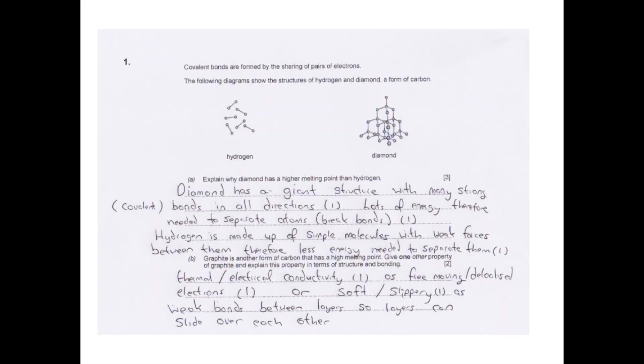Let's see how you got on with the first exam question. The question asks: explain why diamond has a higher melting point than hydrogen. With this question it's important to talk about both diamond and hydrogen. You get one mark if you said that diamond has a giant structure with many strong covalent bonds in all directions. A second mark is awarded if you say that a lot of energy is needed to separate the atoms or break these bonds. For the final mark you must talk about hydrogen — hydrogen is made up of simple molecules with weak forces between them and therefore it takes less energy to separate them. In our previous video on covalent bonding we discussed the properties of covalent substances and the fact that covalent substances consist of simple molecules. It's worth going back to our YouTube channel and watching this video if you're not familiar with this.